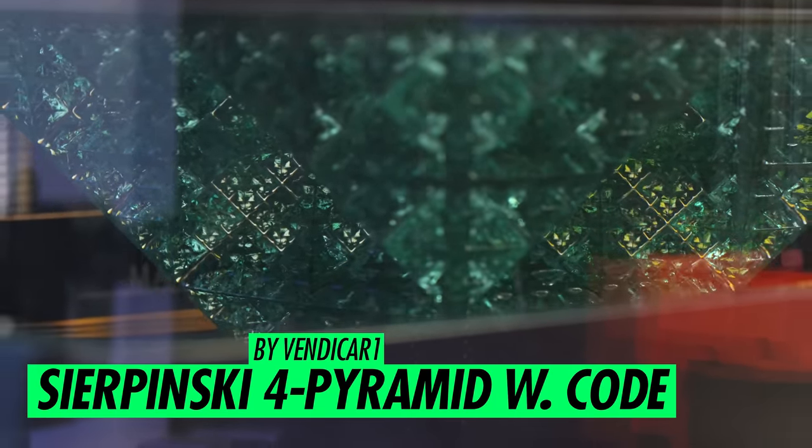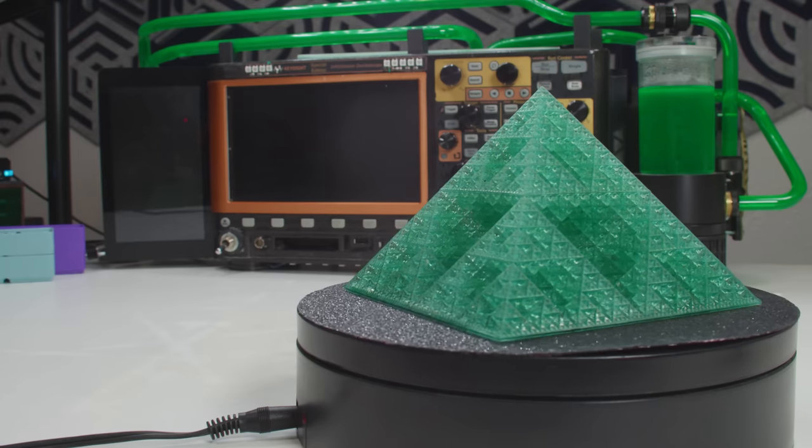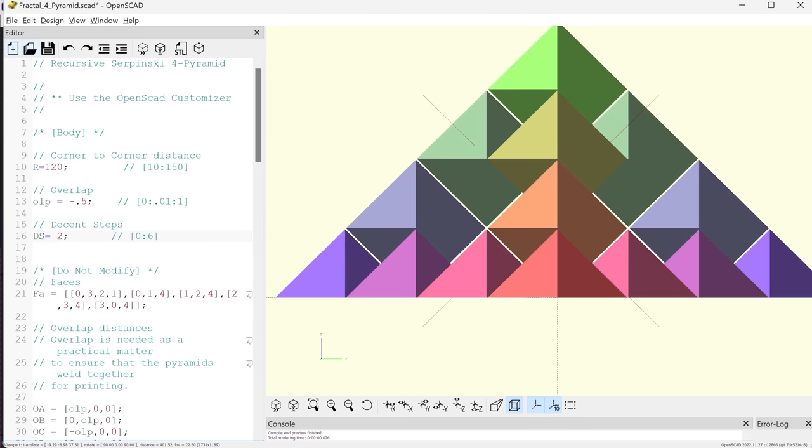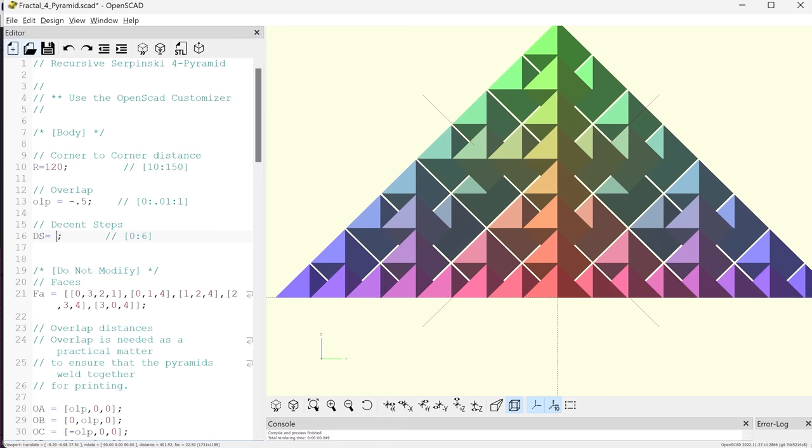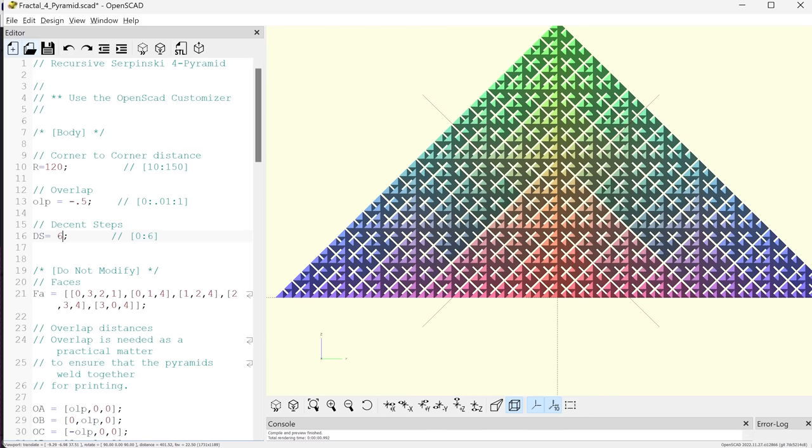Let's put that 12K to the test with an infinitely intricate design. Number 10, the Sierpinski 4 Pyramid by Vendikar 1. The Sierpinski Pyramid is a classic three-dimensional fractal. You start with a pyramid, and you split it into five smaller identical pyramids. Then you split each of those the same way, and continue iterating ad infinitum and/or nauseam.